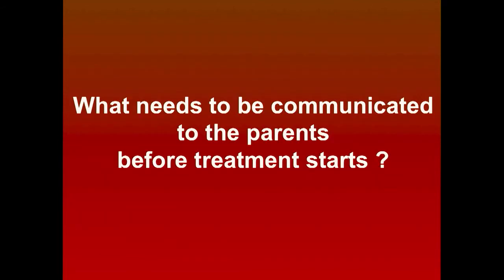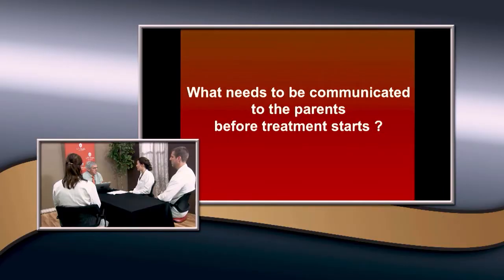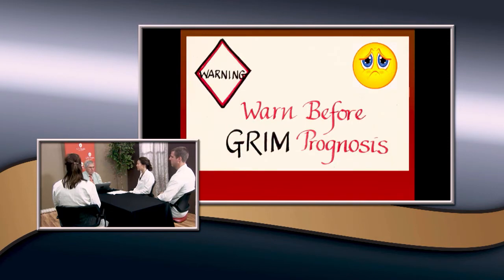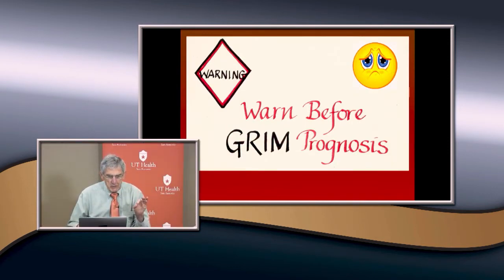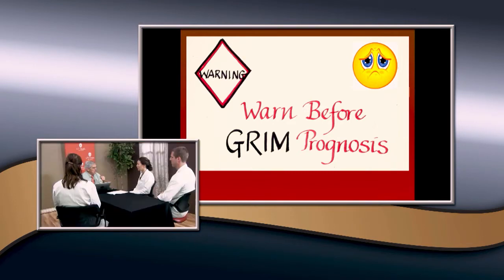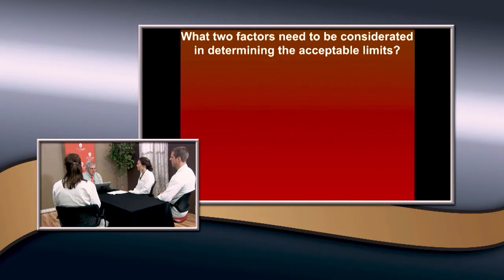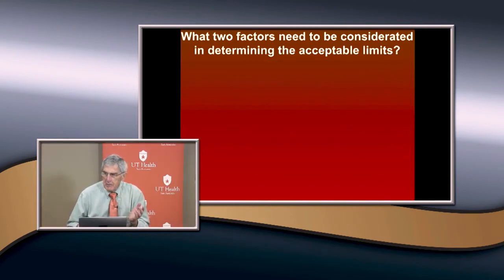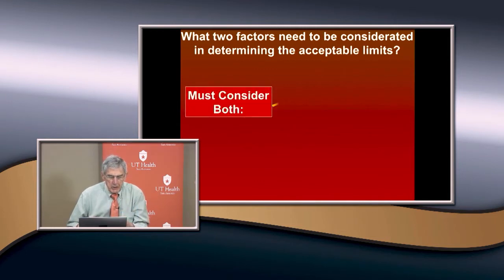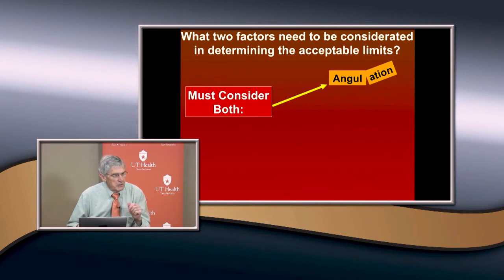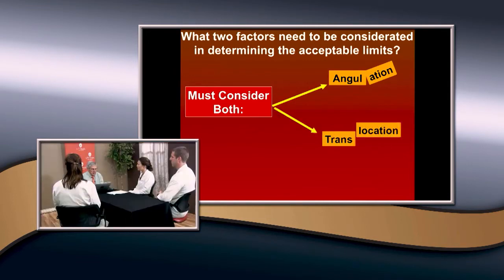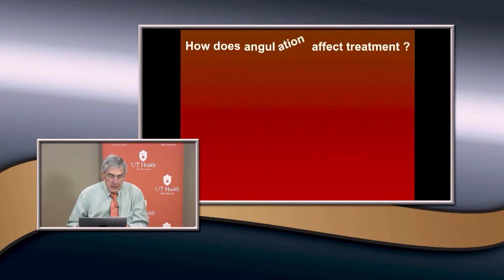The functional range of motion requires about 40 to 50 degrees of supination and pronation. Two factors must be considered in determining acceptable limits before treatment: angulation and translocation. For angulation, less than 30 degrees is acceptable and probably doesn't need treatment — there's some remodeling potential in younger children. Between 30 and 60 degrees, you should try to reduce — these usually respond to closed reduction. Greater than 60 degrees has a higher chance of requiring surgical intervention.